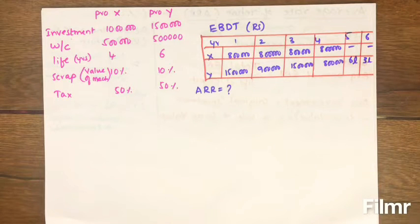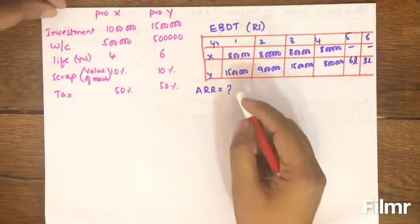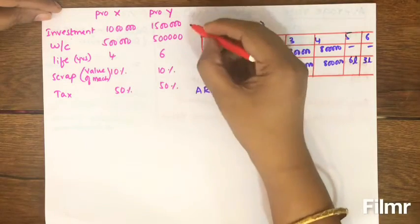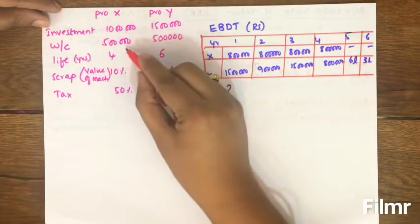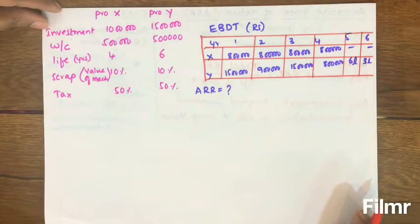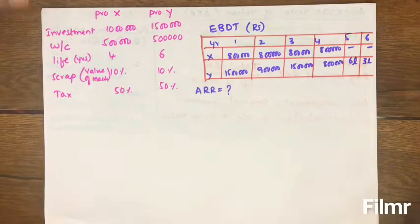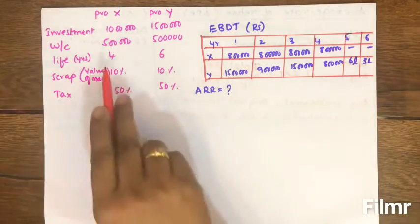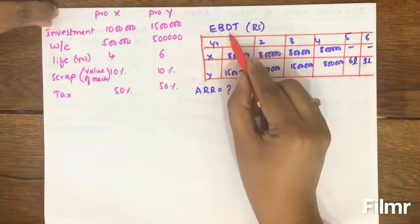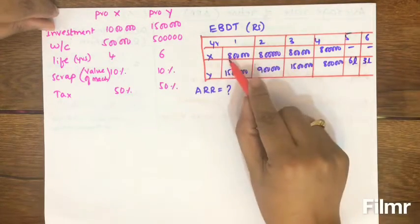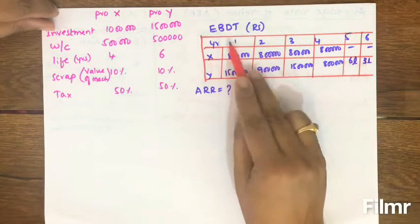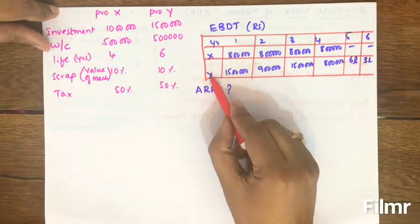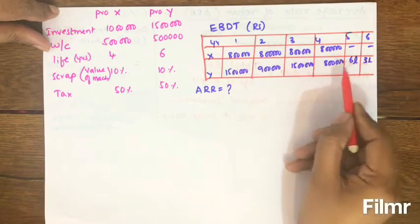In this video let us solve another problem relating to ARR. Here two projects are given — Project X and Project Y — where the total cost of investment is 10 lakhs on Project X and 15 lakhs on Project Y. Working capital is 5 lakhs each for both projects. The life of the assets is 4 and 6 years respectively. Scrap value is 10% of the value of the machine for both projects and tax is 50%. Earnings before depreciation and taxes (EBDT) for Project X is 8 lakhs per year for all 4 years. For Project Y it is 15 lakhs, 9 lakhs, 15 lakhs, 8 lakhs, 6 lakhs, and 3 lakhs respectively.